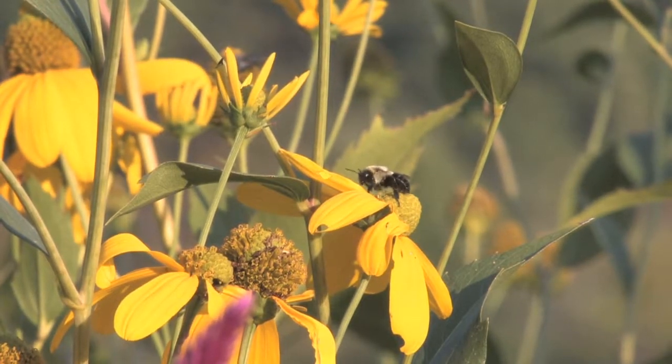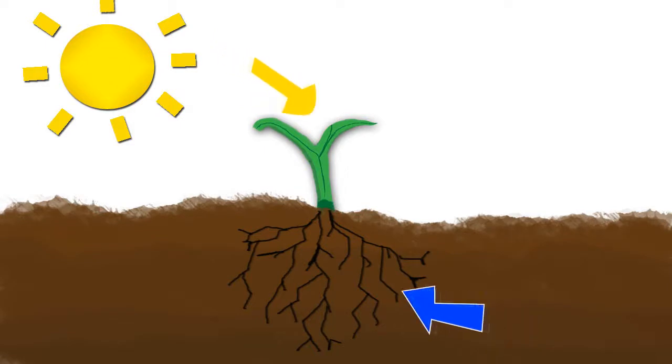Photosynthesis is the process by which the energy of sunlight is captured and used to convert carbon dioxide and water into carbohydrate.